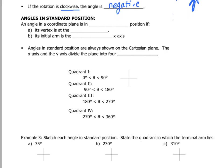Now, what's an angle in standard position? An angle in a coordinate plane is in standard position if its vertex is at the origin and the initial arm is the positive x-axis. Angles in standard position are always shown on the Cartesian plane — the standard xy plane. The x-axis and the y-axis divide the plane into four quadrants.